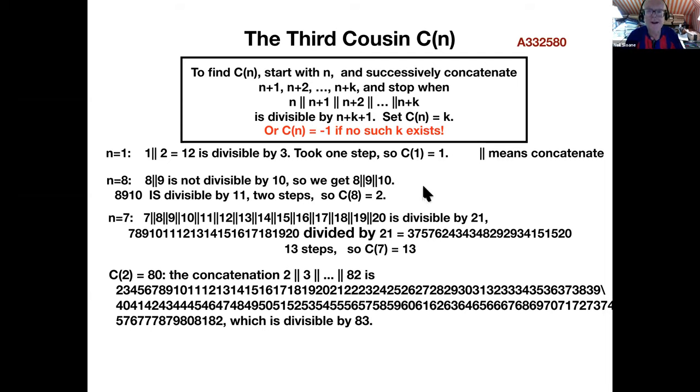The third cousin is called C(n). C stands because it's the third letter, and it also stands for concatenate. I have to say, this is a base dependent sequence. I'm not apologizing for that. I think it's very, very interesting. It's astonishingly interesting. So C(n), it's a sequence. Let me tell you how to construct it. Take n equals 1. What's the first term? We start with 1. The next term after 1 is 2. Does 2 divide 1? No. So we glue 2 to 1, and we get 12. The next term is 3. Is 12 divisible by 3? Yes. That took one step before we got a successful division. So C of 1 is 1.